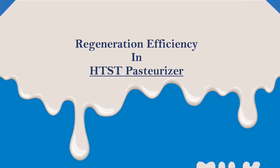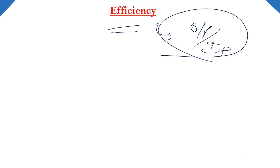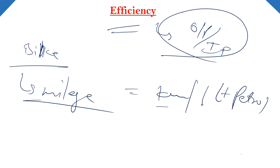In this video we are going to understand Regeneration Efficiency in HTST Pasteurizer. Efficiency ka simple matlab hai output divided by input. Koi bhi equipment hai, koi bhi machine hai, woh kitna energy consume kar raha aur output kitna produce kar raha hai. For example, let's take a bike - the term mileage means ki bike one liter petrol consume karne pe kitna kilometer chal raha hai. That is what we call mileage. Mileage is basically its efficiency.